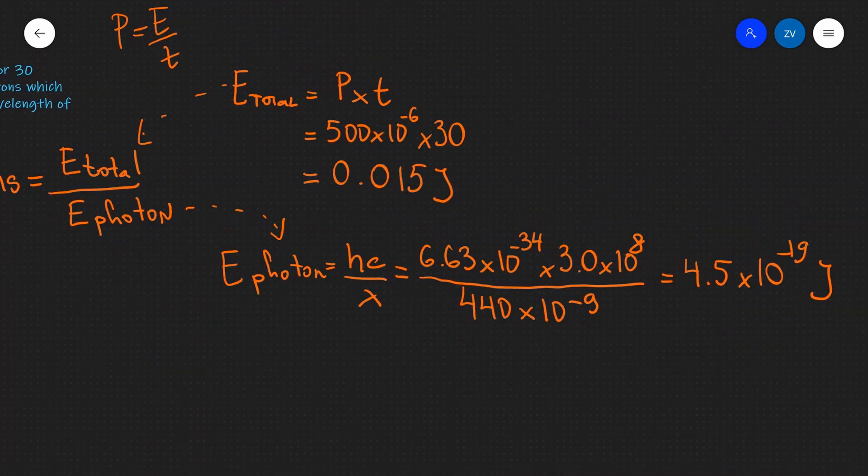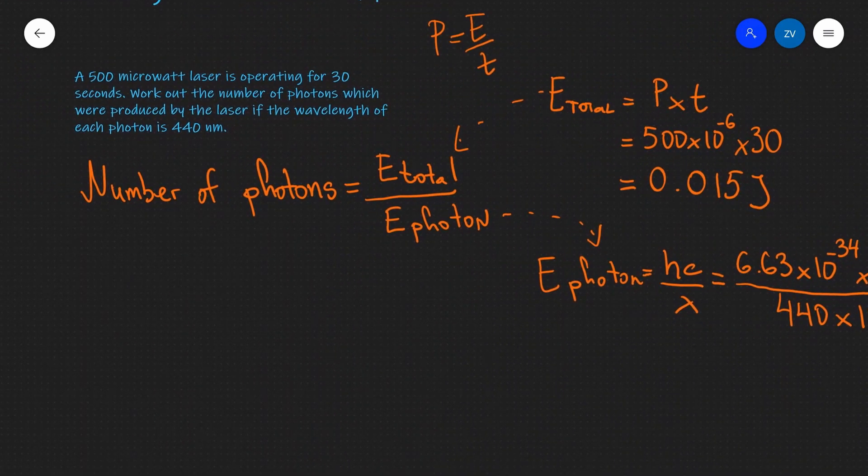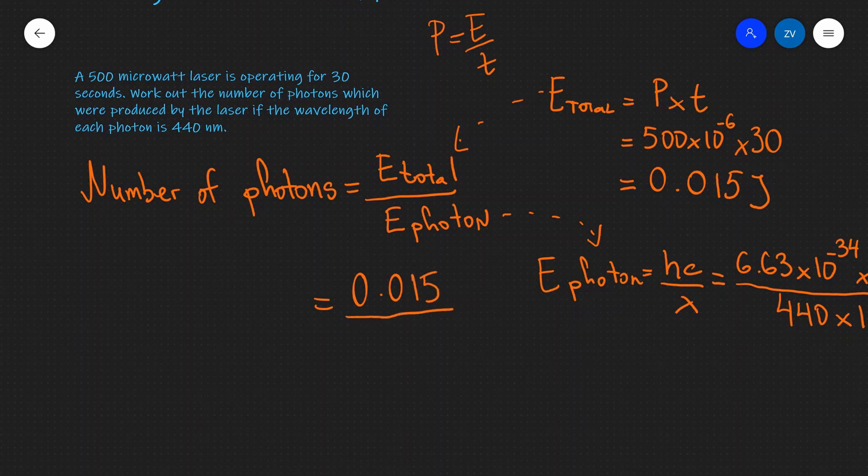In order to work out my number of photons, all I need to do really is divide those two numbers. So my total energy is equal to 0.015 joules divided by 4.5 times 10 to the power of minus 19.